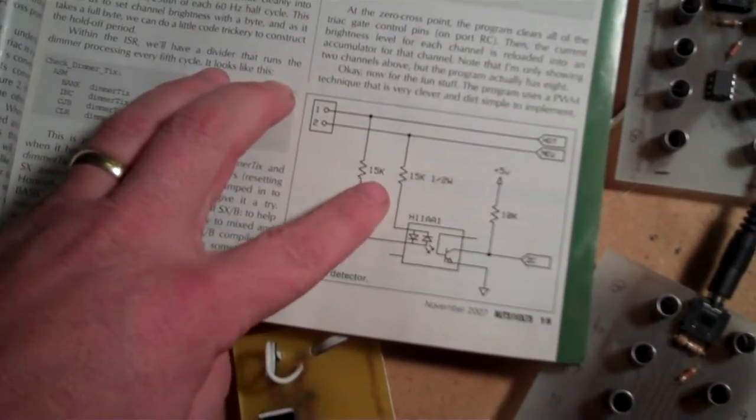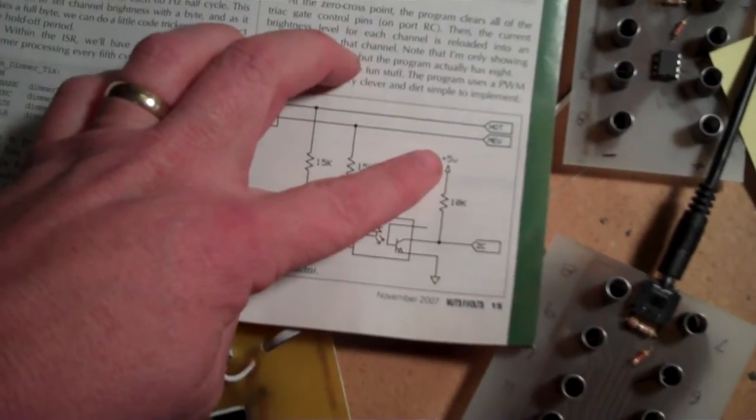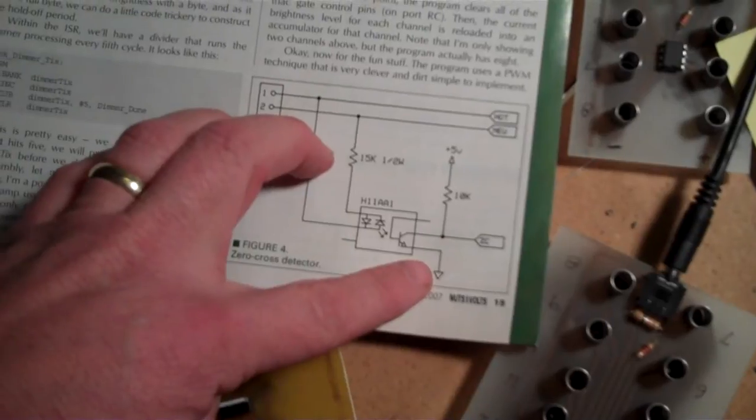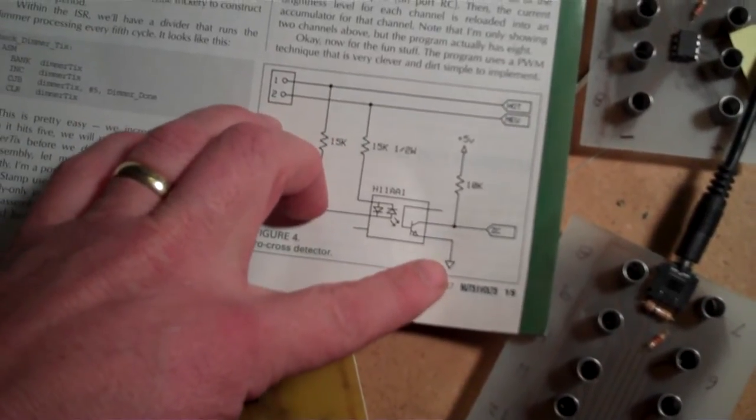I didn't have 15k so I used 10k, and then a plus 5 volt going through a 10k and then going to ground.